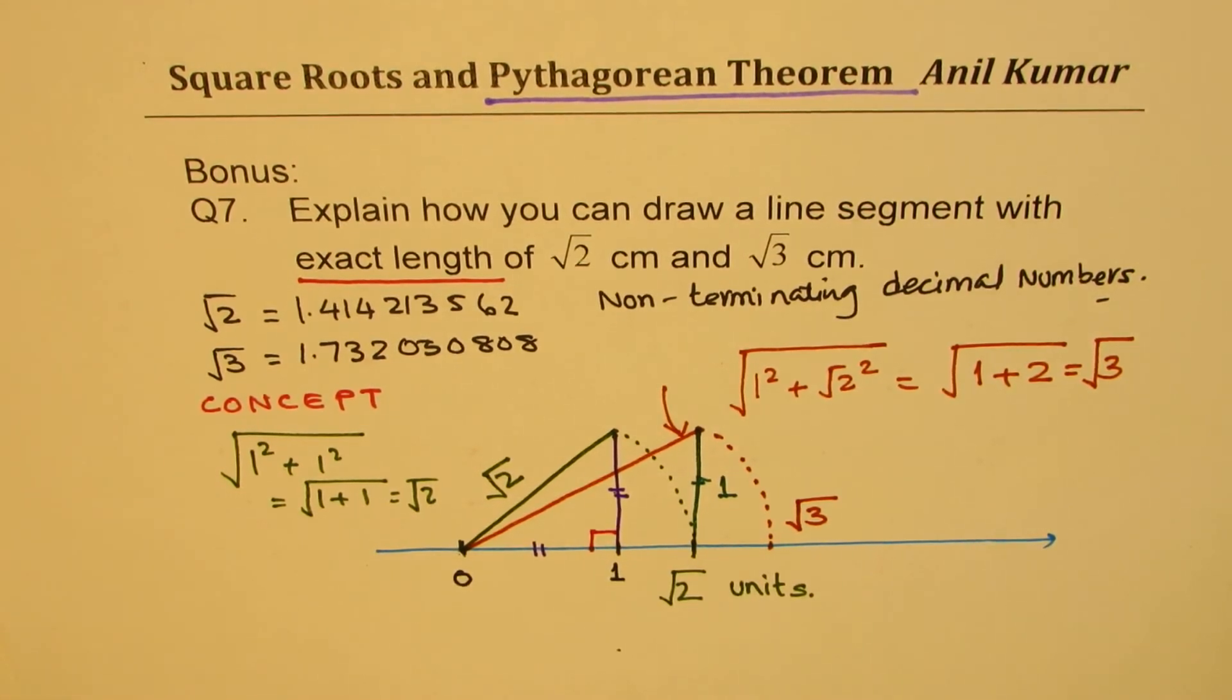So this is an excellent way of getting exact lengths for irrational numbers like square root 2 and square root 3. Now, if you could draw both of them exactly, that means you could draw exact length for any line segment, any irrational number.